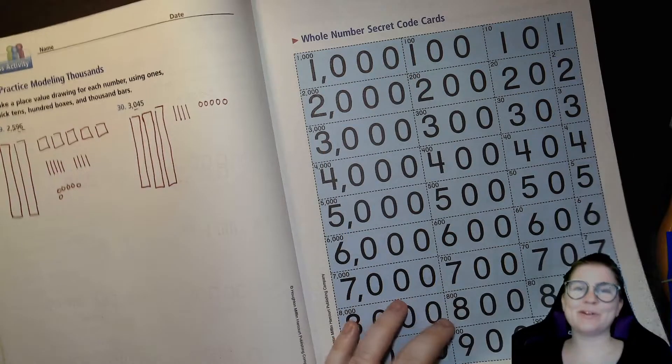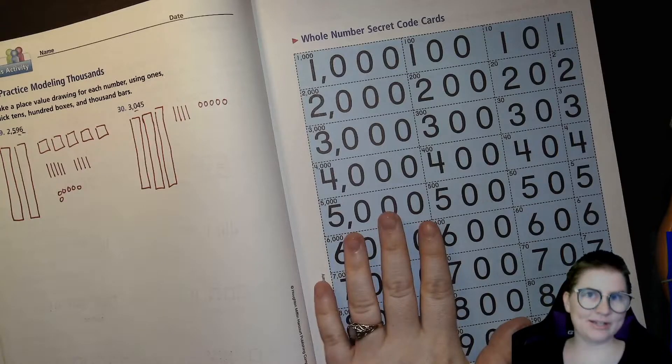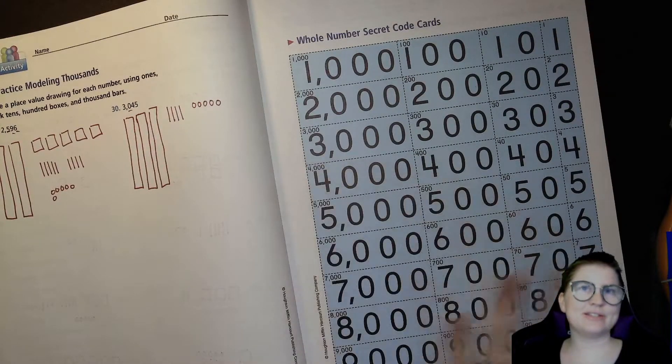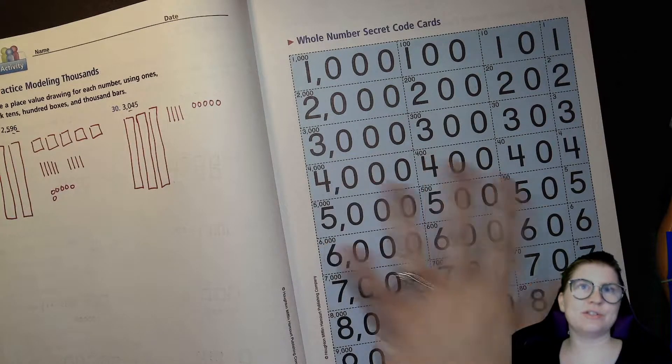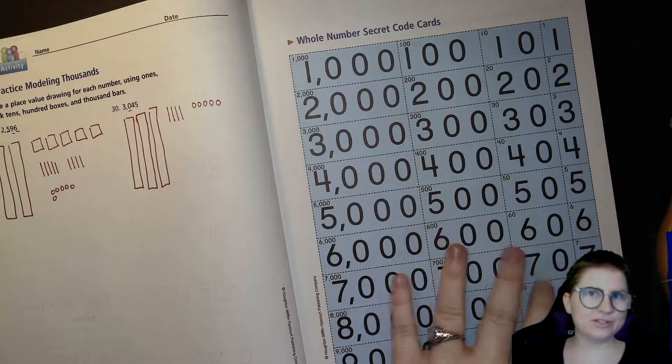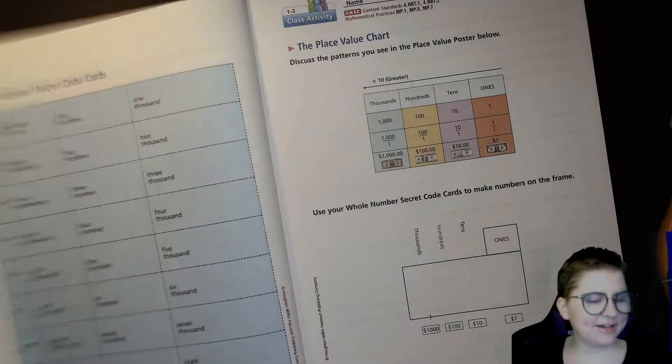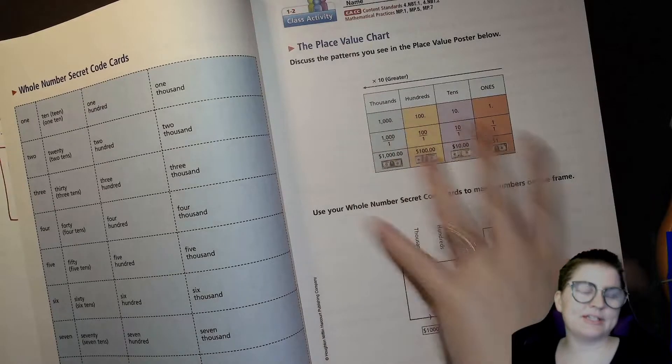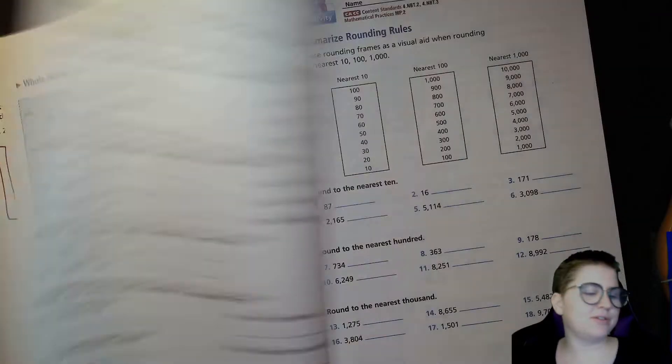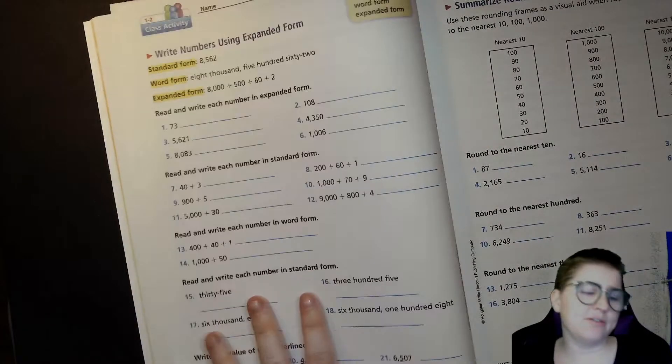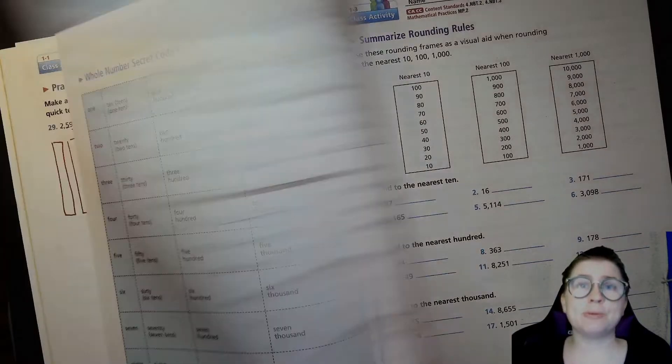Hello my fourth grade friends and welcome back. This is Unit 1 Lesson 2. In this lesson we're gonna start using our secret code cards to do some place value stuff, and we're gonna take another look at this place value chart that we kind of drew out the other day. Then we're gonna talk about the different forms of numbers, and that's gonna be it for this lesson. Then you can show me what you've learned in our Think Central activity.